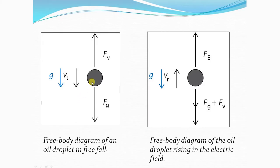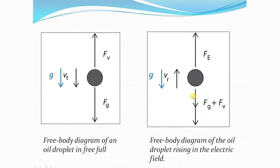This is how the drop falls or rises upwards in Millikan's oil drop experiment. When the drop falls with a constant terminal velocity VT, the force of gravity acts downwards and the viscous force of the air acts upwards. When these are equal and opposite, the drop falls with a constant downward velocity called the terminal velocity VT. Similarly, when an electric field is applied between the plates, the electric force Fe acts upward, the weight of the drop acts downward, and the viscous or buoyancy force also acts downward. When FG plus FV equals Fe, the drop ascends with a constant velocity upwards.